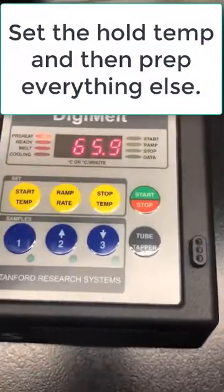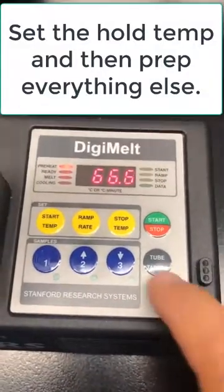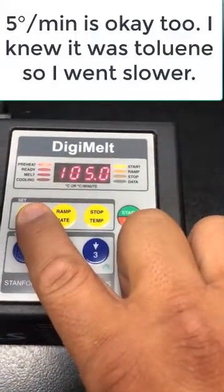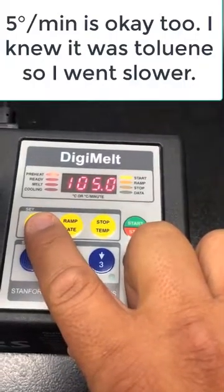Just like a melting point, I had to set a temperature, and so I'll do a ramp rate of 2. My start temperature is 105 because I know it's toluene. I know it's 111.